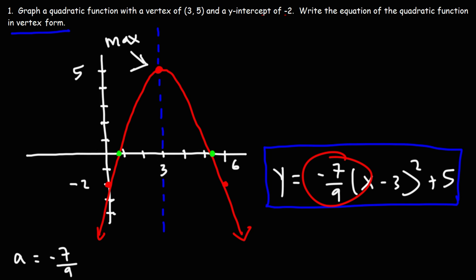In order to find the x-intercepts, we need to set y equal to 0. Because on the x-axis, y is equal to 0. So using this equation, let's replace y with 0. And we're going to solve for x.